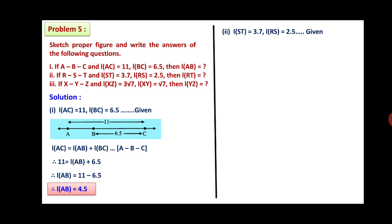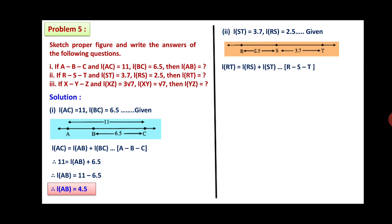Number 2: if R, C, T is the betweenness, L(ST) equals 3.7 and L(RC) equals 2.5, find L(RT). From the figure, L(RT) equals L(RC) plus L(CT). Therefore, L(RT) equals 2.5 plus 3.7, so L(RT) is equal to 6.2.